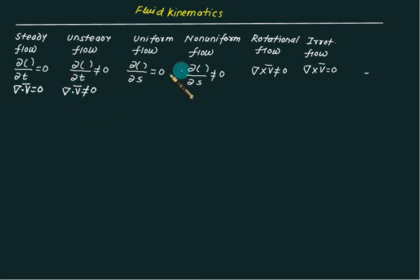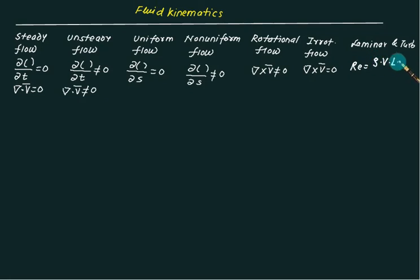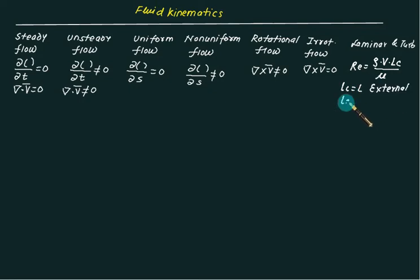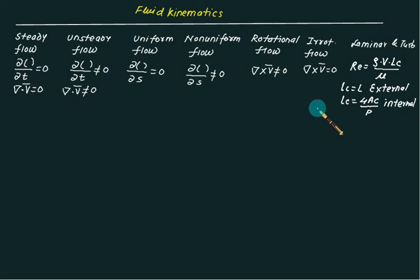For steady incompressible flow, divergence equals zero; for unsteady flow, divergence is not equal to zero. The next classification is laminar and turbulent flow, based on Reynolds number. Reynolds number is given as density multiplied by velocity multiplied by characteristic length Lc, divided by dynamic viscosity μ. For external flow, Lc equals L measured parallel to the flow; for internal flow, Lc equals four times cross-sectional area divided by wetted perimeter P.